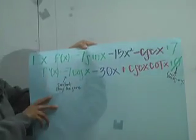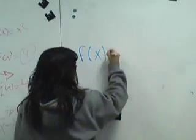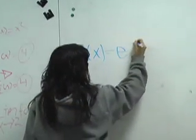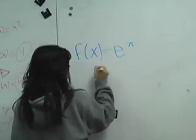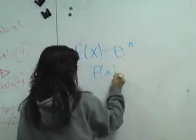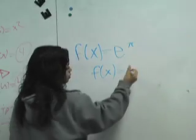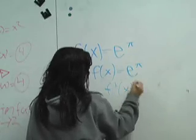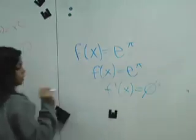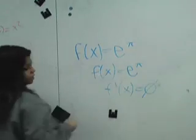The common mistakes is f(x) equals e to the x. Usually they think it's going to be e to the prime, but the prime is just zero. It's the same, but the derivative is zero.